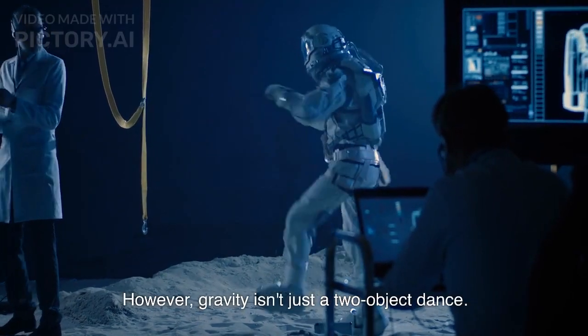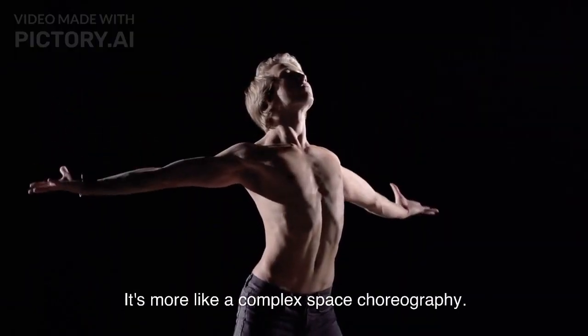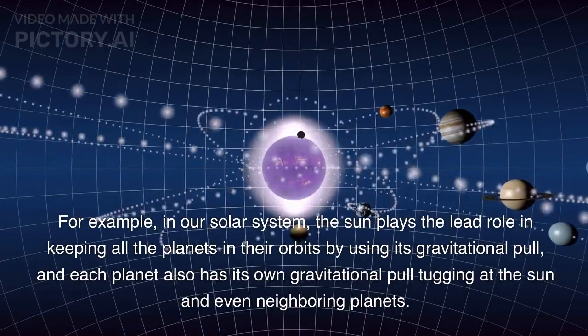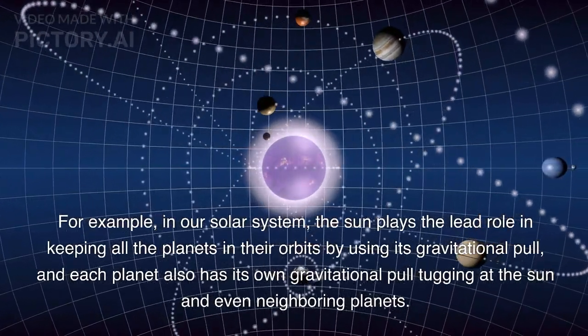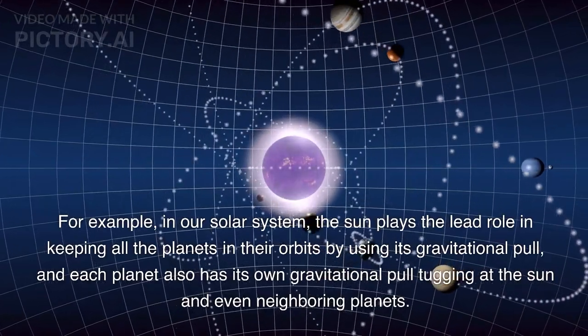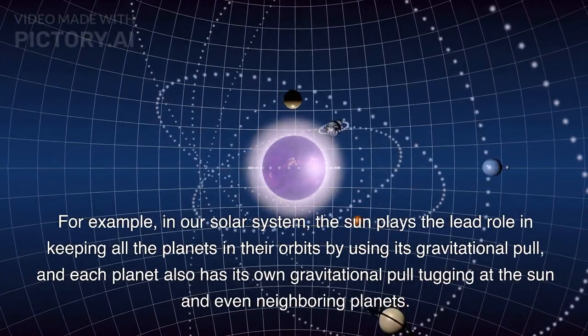However, gravity isn't just a two-object dance. It's more like a complex space choreography. For example, in our solar system, the Sun plays the lead role in keeping all the planets in their orbits by using its gravitational pull, and each planet also has its own gravitational pull tugging at the Sun and even neighboring planets.